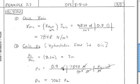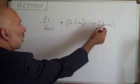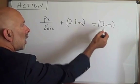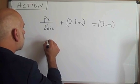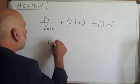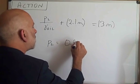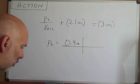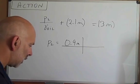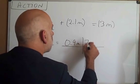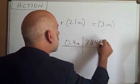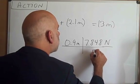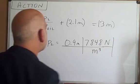Let's look at how the grid method is applied. I'm going to go over to the whiteboard. So, 3 meters minus 2.1 meters is 0.9 meters. So, P2 equals 0.9 meters times gamma oil from the previous step. That is 7848.